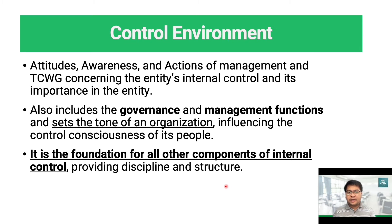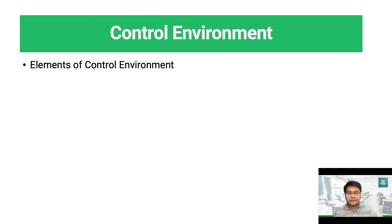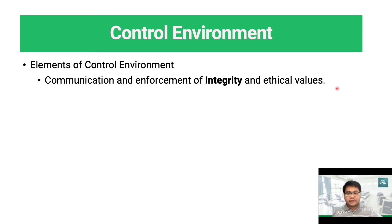When assessing the control environment of our client, we evaluate different aspects that help us determine whether the client has a good control environment or not. The control environment consists of several elements. The first is communication and enforcement of integrity and ethical values. Evidence we can obtain includes whether the client implements a code of conduct, how the client deals with employees, suppliers, customers, investors, and auditors, and whether they set realistic and fair performance measures.